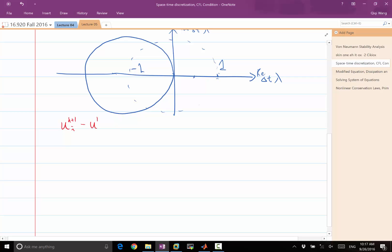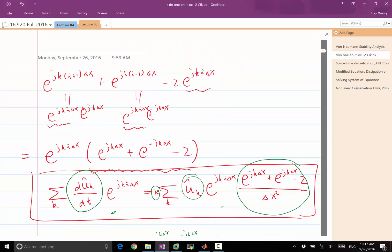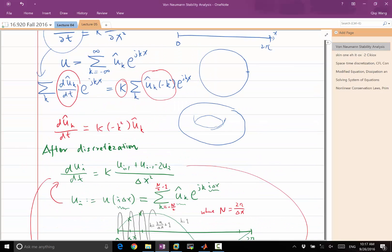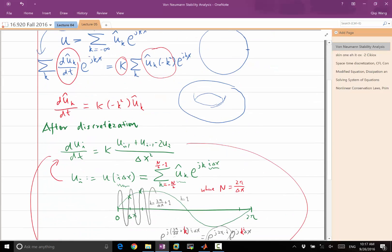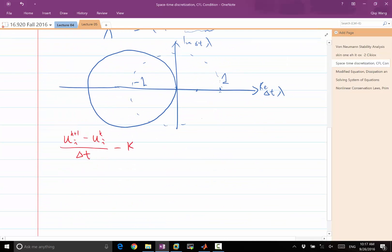So let's say this is going to be replacing my time derivative here, discretized using forward Euler, and my right hand side is still the same delta x squared.